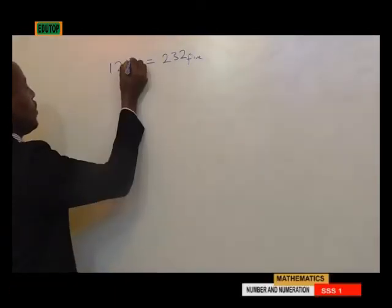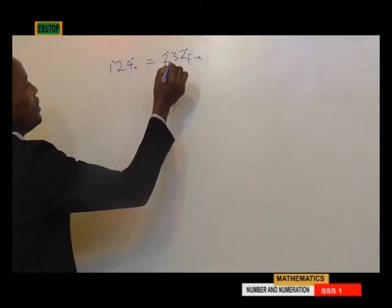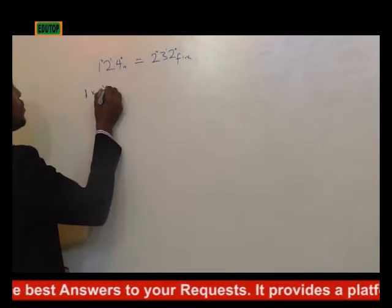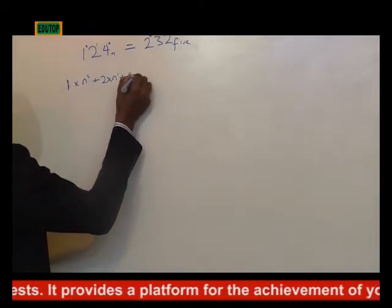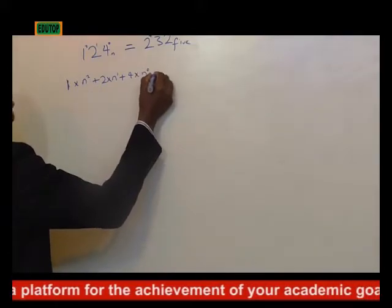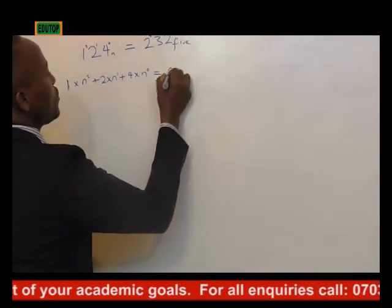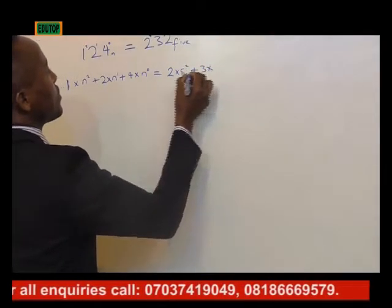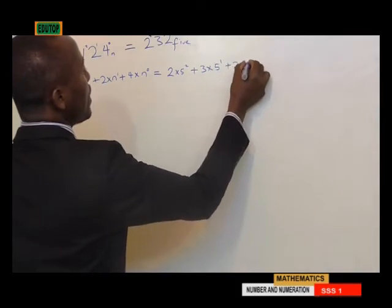Starting from the right, the powers are 0, 1, 2. That would be 1 times n raised to the power of 2, plus 2 times n raised to the power of 1, plus 4 times n raised to the power of 0. That equals 2 times 5 raised to the power of 2, plus 3 times 5 raised to the power of 1, plus 2 times 5 raised to the power of 0.